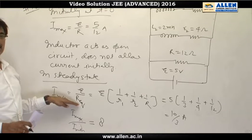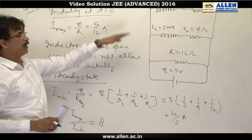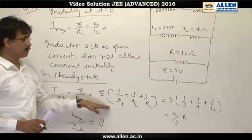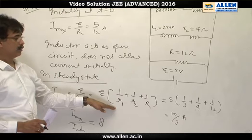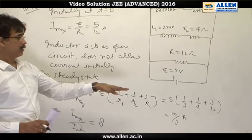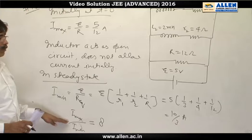And it is E upon equivalent resistance. Since these three branches are in parallel, equivalent resistance is 1 upon RL plus 1 upon R2 plus 1 by R. Thus we get I minimum.